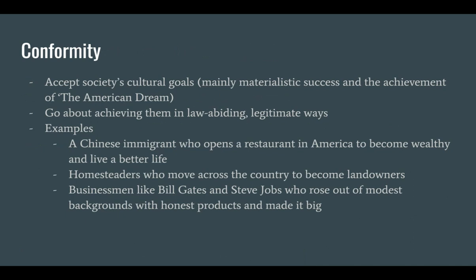Examples include a middle-class individual who graduates high school, goes to college to find a higher-paying job, achieves it, and buys a house and starts a family. Or a Chinese immigrant who comes to America in the hopes of finding a better life for his family, opens a restaurant, and becomes successful. In the 19th century, they were homesteaders who moved across the country into the Wild West to find a better life or gold. And businessmen like Bill Gates, who exploded into the global scene, becoming one of the richest men alive from his humble origins.